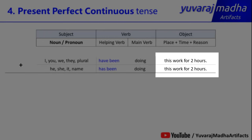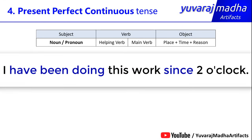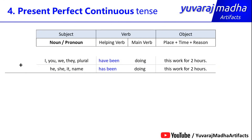You may be confused about the word 'for'. For is used with a duration — for two hours, for three hours, for one week, for ten years. 'Since' is used with a particular point of time — since 2 o'clock. So: 'I have been doing this work since 2 o'clock.' Use 'for' with duration, use 'since' with a specific point of time.